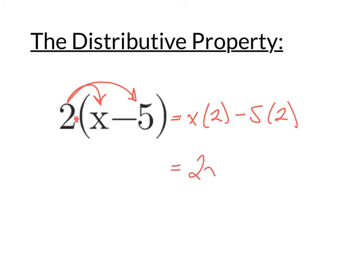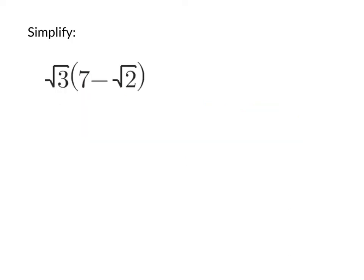x times 2 is 2x, and negative 5 times 2 is negative 10, so that simplifies to 2x minus 10. That's how we're going to use the distributive property, even when we start using it in conjunction with radicals.